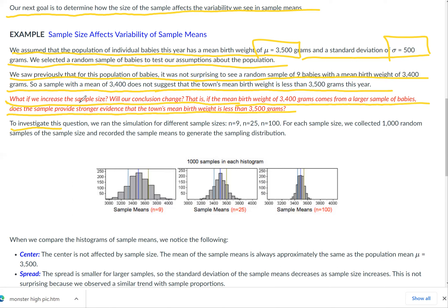To investigate this question, we ran the simulation for different sample sizes: n = 9 like previously, larger n like 25 and 100. For each sample size, we collected 1,000 random samples of the sample size and recorded the sample means to generate the sampling distribution.